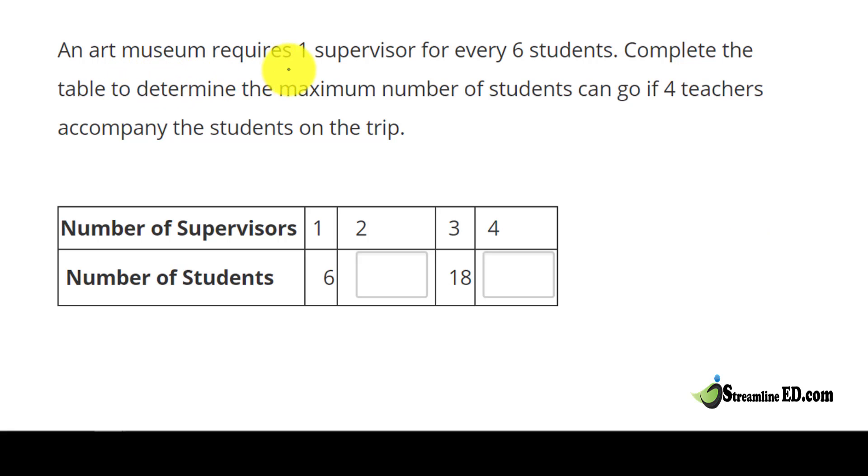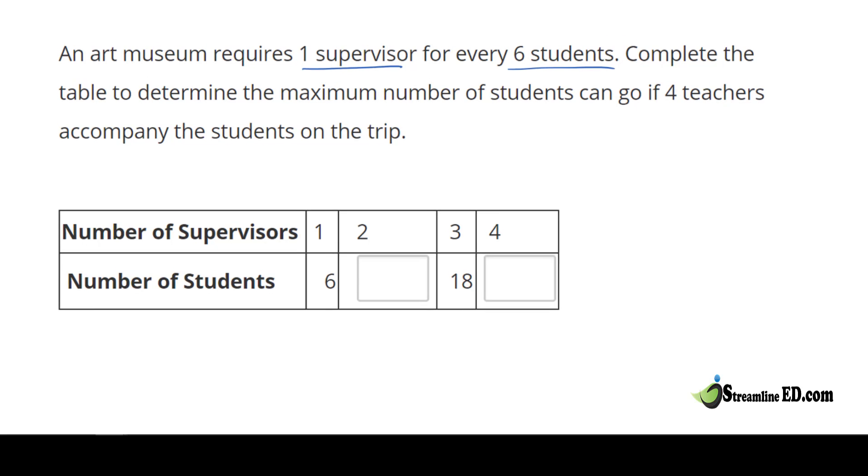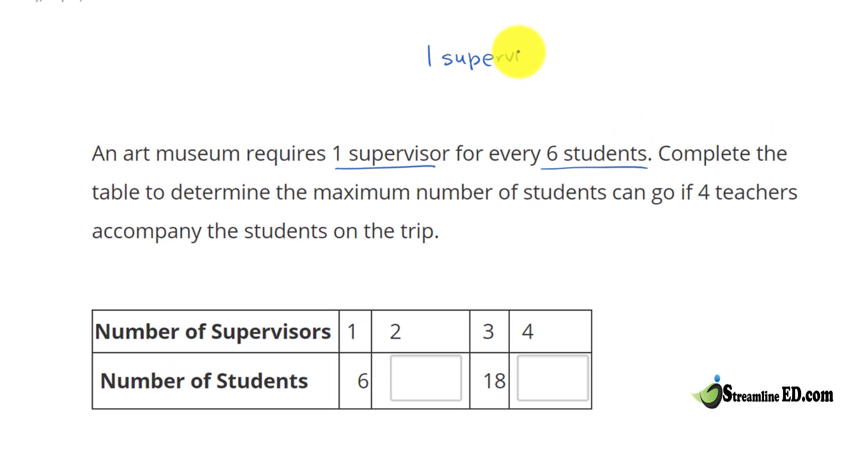An art museum requires one supervisor for every six students. There you go, we have a first rate which is one supervisor for every six students. So we have two quantities of two different units, supervisor and student, which can be expressed as six students equal to one supervisor.